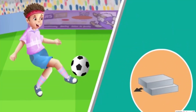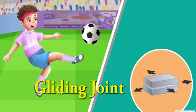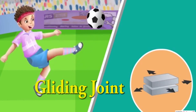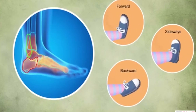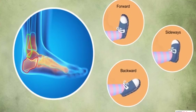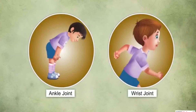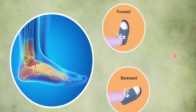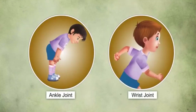The last type of joint is the gliding joint. This type of joint allows the bones to glide over each other, allowing slight movement of the body parts. The joint bones are flat, so they slide back and forth and side to side. The ankle joint and the wrist joint are some examples of the gliding joint.